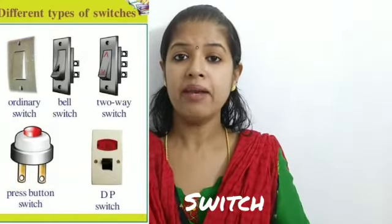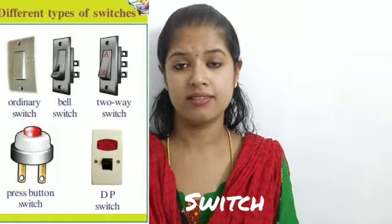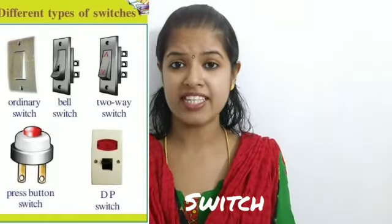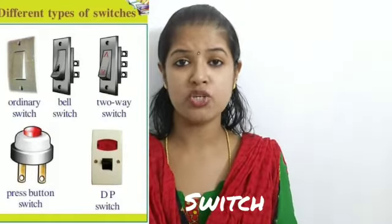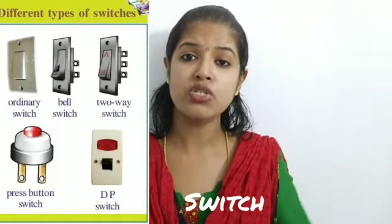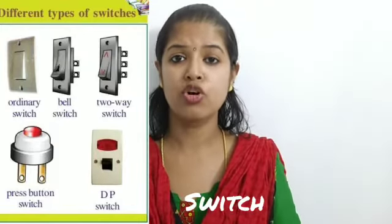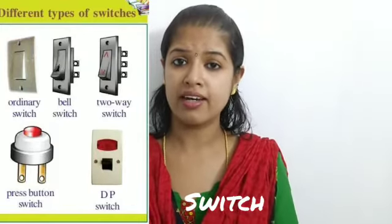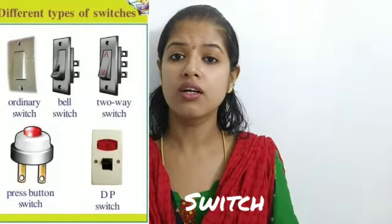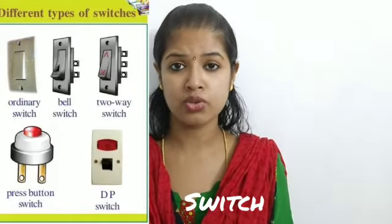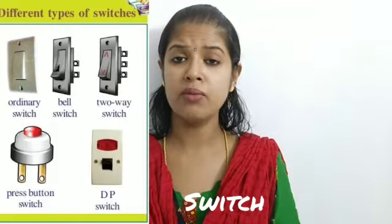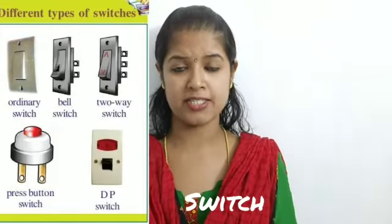Next is the press button switch. As you can see from the picture, it can be used in two ways — for running electric bulbs or for running a bell. So you can use it in both ways.